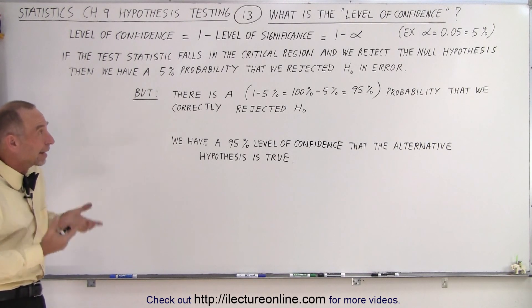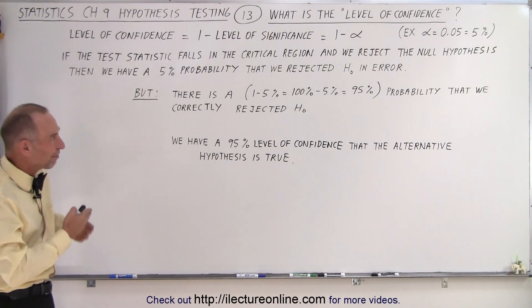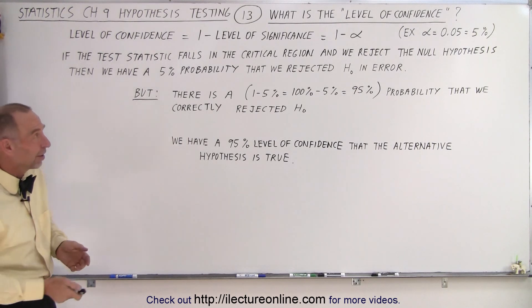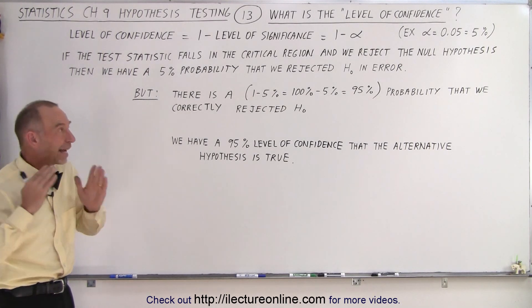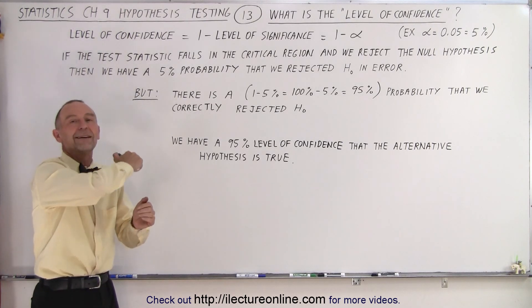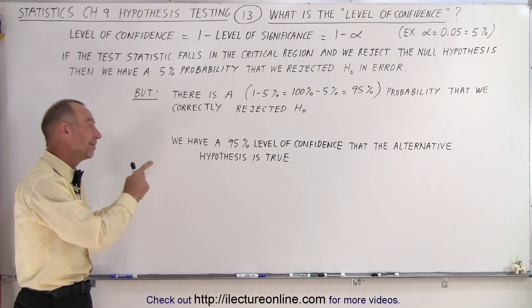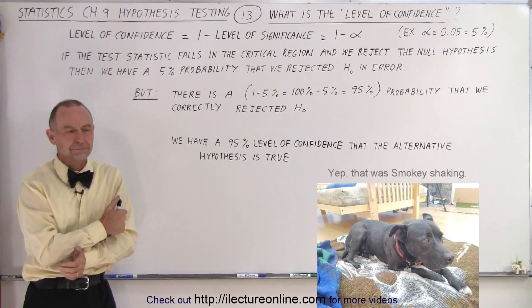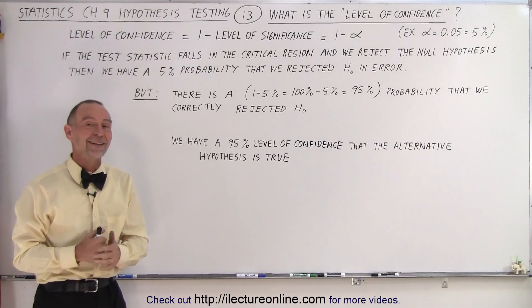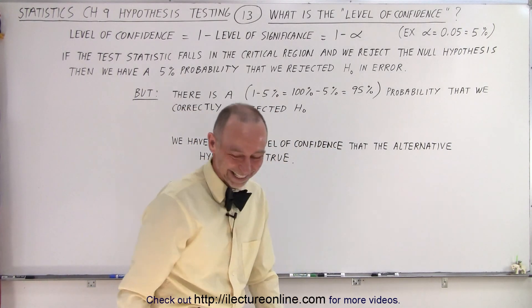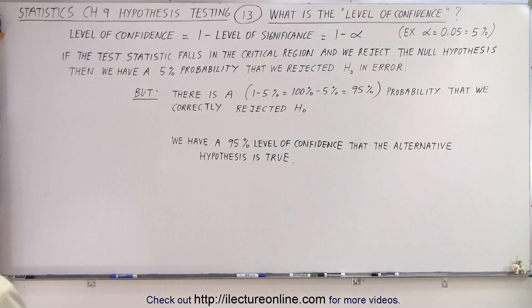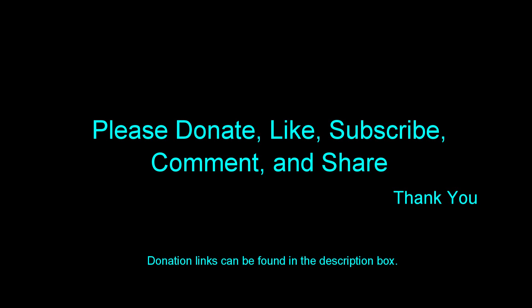That's another way of thinking about the outcome of a hypothesis test. We have a 5% probability that we may reject the null hypothesis incorrectly if we set the level of significance equal to 5%. But subtracting that 5% from 100% gives us a 95% level of confidence that we correctly rejected the null hypothesis, and therefore correctly concluded that the alternative hypothesis is true. That is what we mean by the level of confidence.